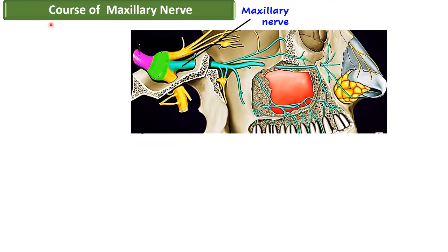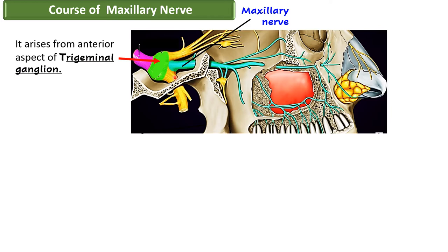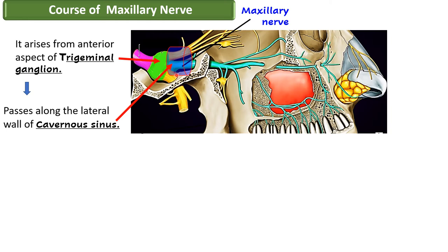Let us start with the course of the maxillary nerve. It arises from the anterior aspect of the trigeminal ganglion, as we can see clearly here. After that, the maxillary nerve enters and runs along the lateral wall of the cavernous sinus. We can see that both the ophthalmic and maxillary nerves run along the lateral wall of the cavernous sinus, with the ophthalmic above the maxillary nerve.